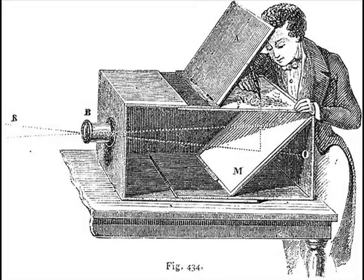The principles of the camera obscura were known since the 5th and 4th century BCE by the Chinese and Greeks respectively. Although images formed by pinholes were known to the ancients, the discovery of lenses in the 15th century made it possible to obtain a bright and clear picture.